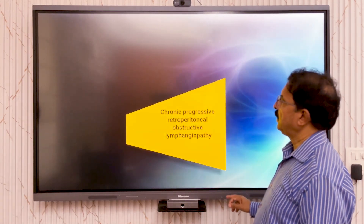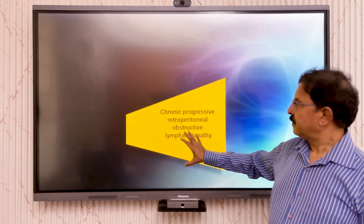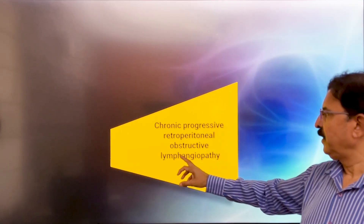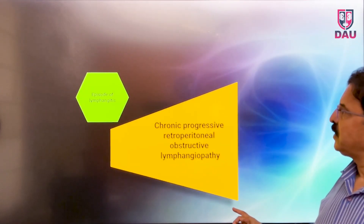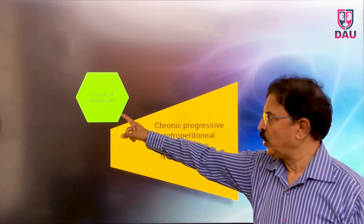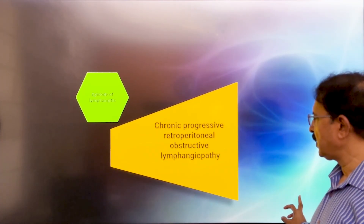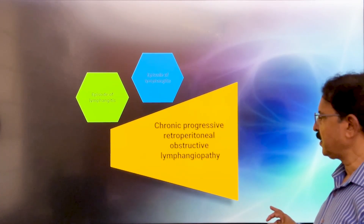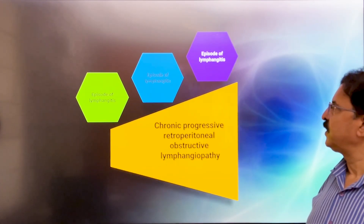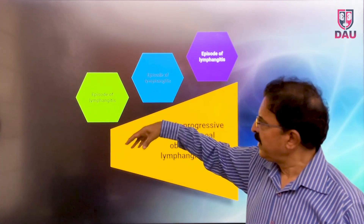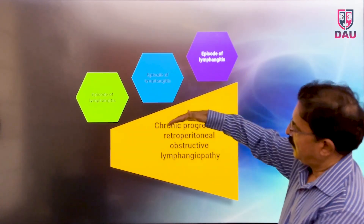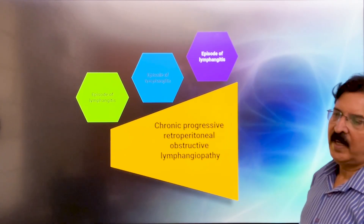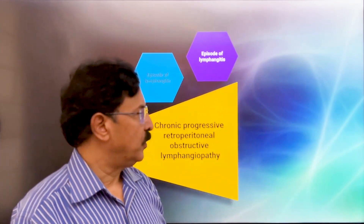The key point is that chyluria is a consequence of chronic progressive retroperitoneal obstructive lymphangiopathy. Each episode of lymphangitis that settles is followed by another, and another, so with every successive attack the chronic obstructive lymphangiopathy becomes more and more severe, and patients have increasingly serious chyluria.